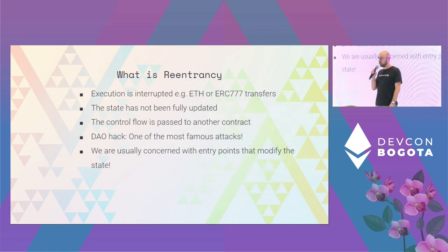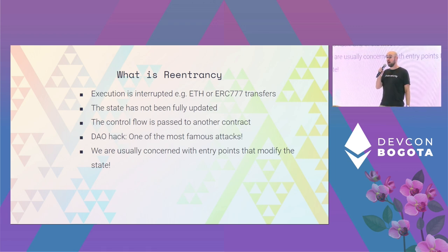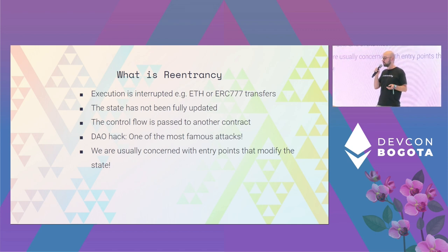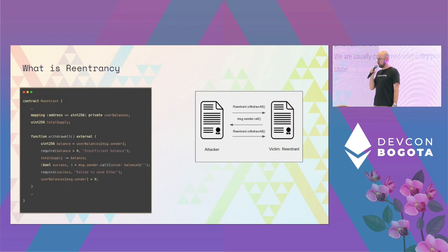What is re-entrancy? A re-entrancy takes place when the execution of a smart contract is interrupted and the state has not been fully updated, and control is passed to another smart contract which can then call again a function of the smart contract whose state hasn't been finalized. Up until now, traditional re-entrancy was concerned only with entry points that modify the state — but as we will show, this is not the case here.